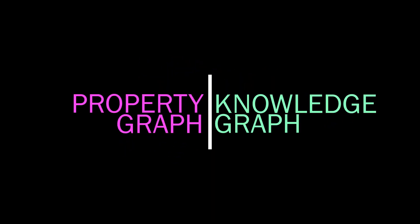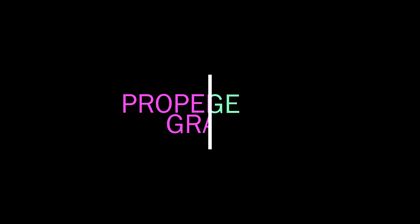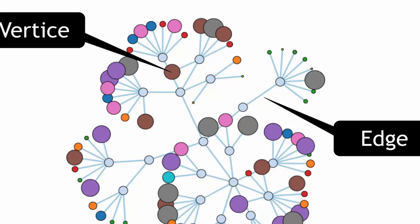Graph databases are basically of two types: one is a property graph and the other is a knowledge graph. A property graph's structure is constructed based on two attributes: one is vertices, otherwise called nodes, and the other is called edges.